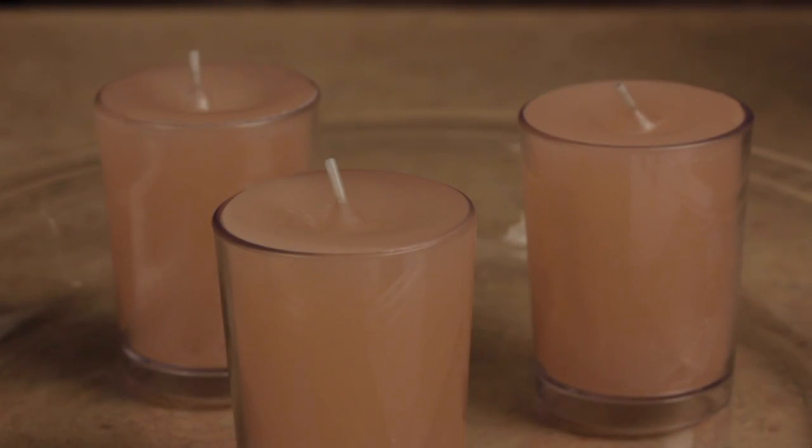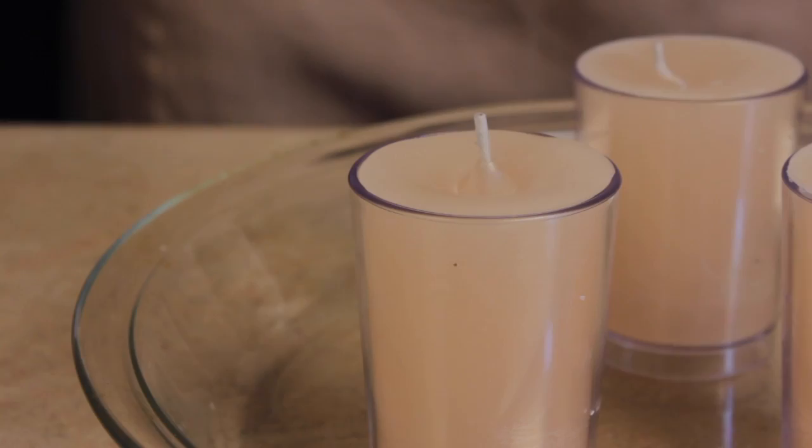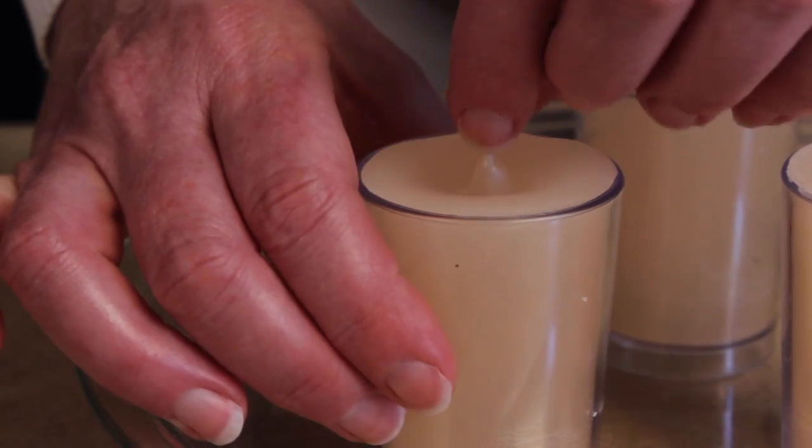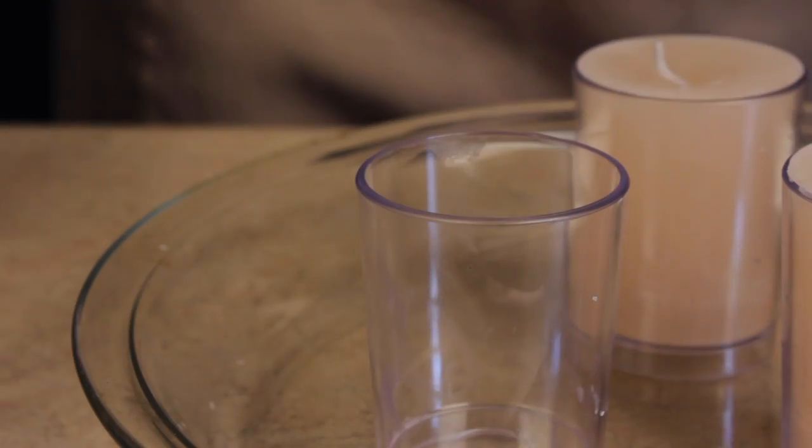Place the pouring pot back on the pot holder and allow the votives to cool and completely solidify for approximately two hours. At this point, the candle should have contracted enough so they will easily release from the molds.